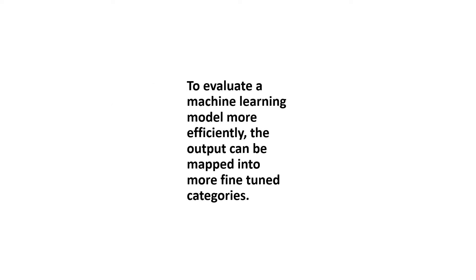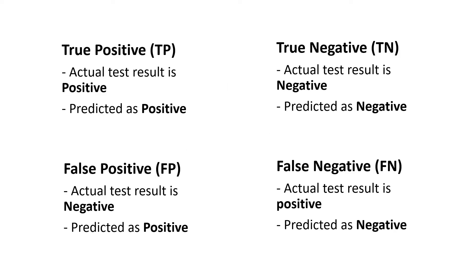So the model is not useful at all, even if it has 90% accuracy. To evaluate machine learning models more efficiently, the output can be mapped into more fine-tuned categories: true positives, true negatives, false positives, and false negatives. In our cancer test example: if the actual result is positive and the model predicts positive, it's a true positive. If actual is negative and the model predicts negative, it's a true negative. If actual is negative and the model falsely predicts positive, it's a false positive. If actual is positive and the model falsely predicts negative, it's a false negative.